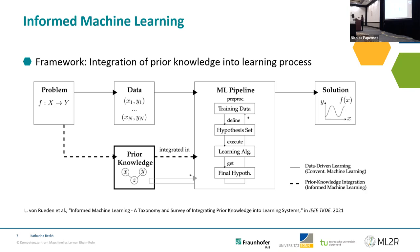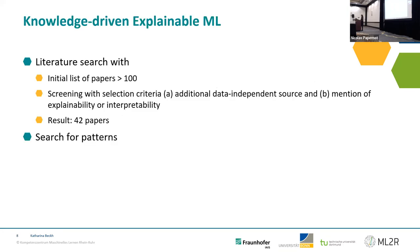Prior knowledge can come in different forms: you might have world knowledge, you might have expert knowledge, and these can be knowledge graphs, logical rules, simulations — there's a whole field about physics-informed machine learning. This prior knowledge gets integrated into the different stages of the machine learning pipeline. We use that as a basis to look at where explainability comes in here, because it was only mentioned as a side effect in this framework, and we looked at how it comes in.